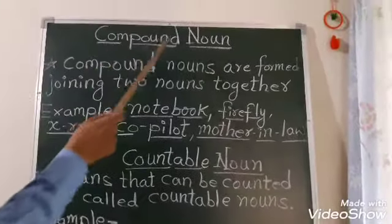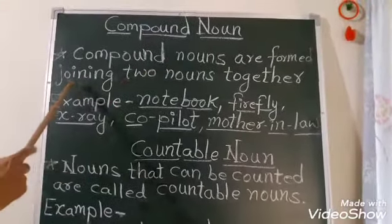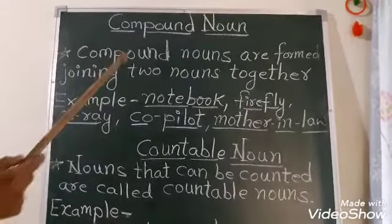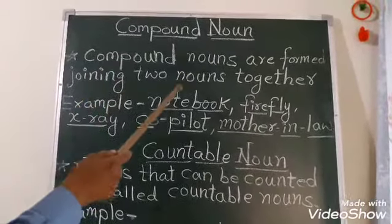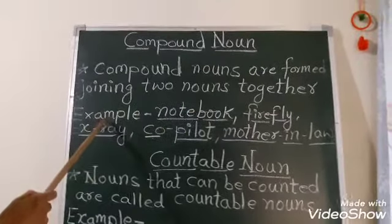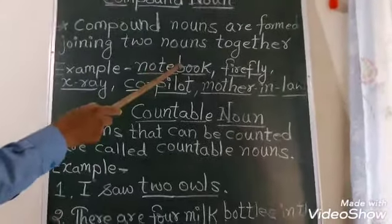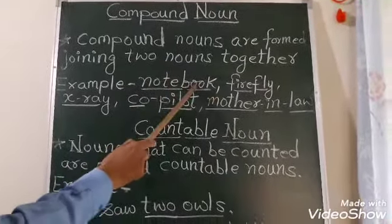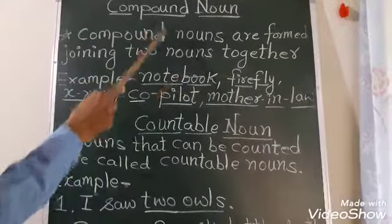Compound noun. Compound nouns are formed by joining two nouns together. For example, notebook. Note plus book equals notebook. We join both together to form compound nouns.